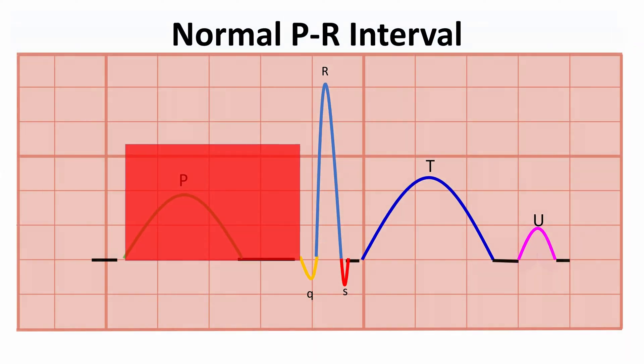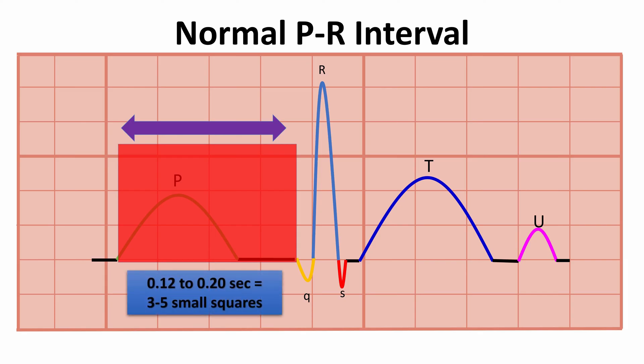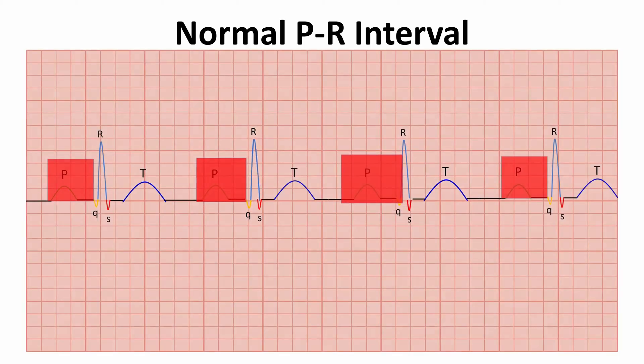The normal PR interval is in the range of 0.12 to 0.20 seconds or 3 to 5 small squares, depending upon the heart rate.